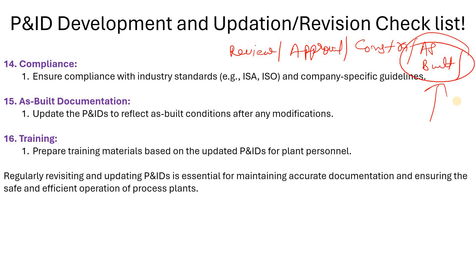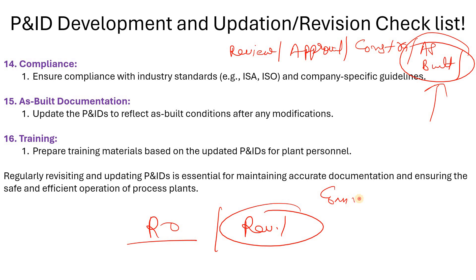One important best practice: do not release P&IDs again and again. Release in revision 0, collect all department comments and client comments together, incorporate them all in revision 1, then release. Do not release P&IDs two or three times a week — that is not good practice. Release once, but after compiling all information. That's all for today's video — I hope you learned something new. Thanks for watching, and keep learning.